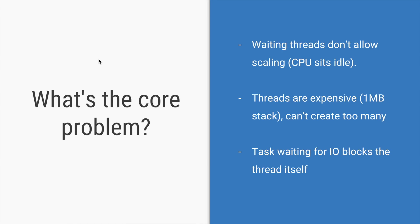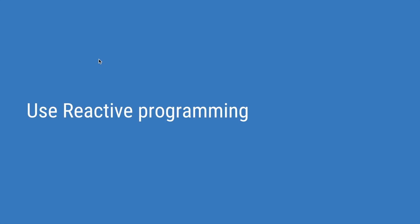So the problem we have is: when you're waiting for threads, your CPU is idle; but if you create too many threads, it consumes a lot of memory. A task always waits or blocks whenever there is an I/O operation. One way to get around this is to use reactive programming.